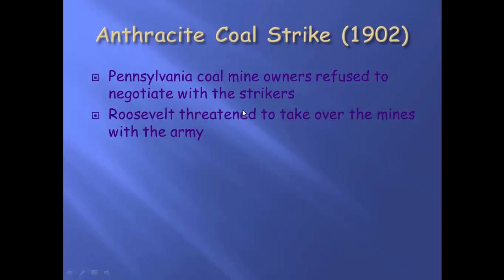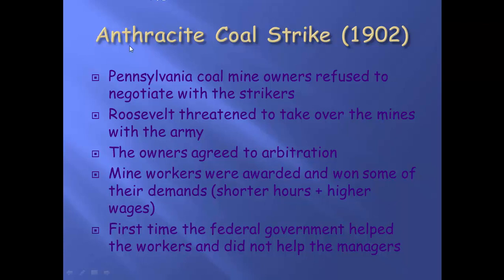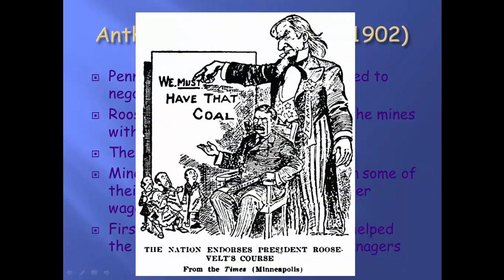Roosevelt takes over. He basically calls the mine owners and says, if you don't figure this out, I'm going to send in the army. And the owners agree to submit to arbitration, where two sides get together to tell what they want, and then a third party determines their fate. The mine workers actually won some of their demands — not everything, but they did get a shorter workday down to 10 hours, and they got a small pay raise. So they were able to go back to work and get the coal the country needed. The anthracite coal strike of 1902 was the very first time the federal government stepped in to help the workers and not the owners or managers.